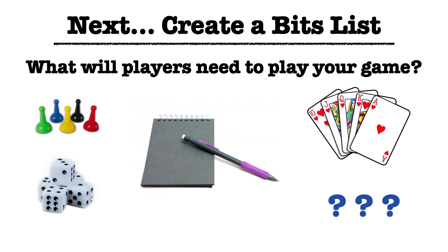Anything that players can't scrounge on their own, you'll need to provide in some fashion as print-and-play content — content you format that they can download, print, and cut out to supplement what they have. So an event deck or scoring tokens, for example, might not be things they can easily replicate by scavenging other games or using coins, beads, or other materials they might not have on hand.